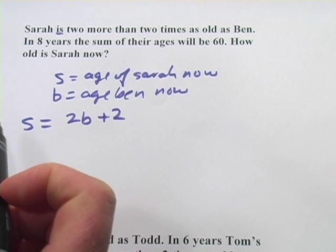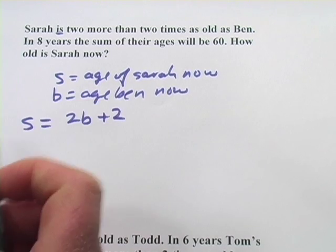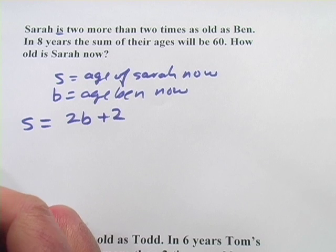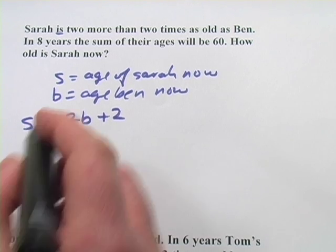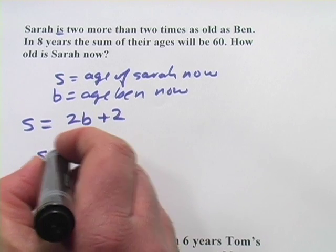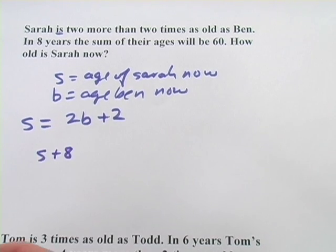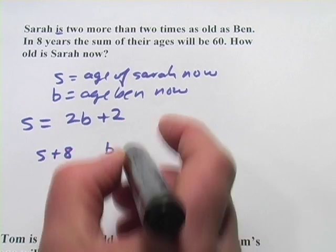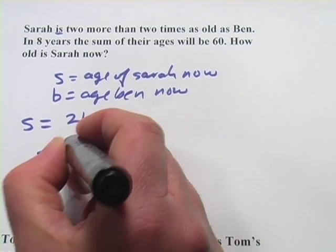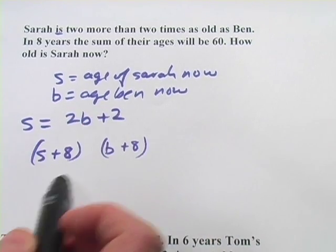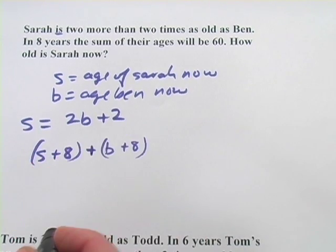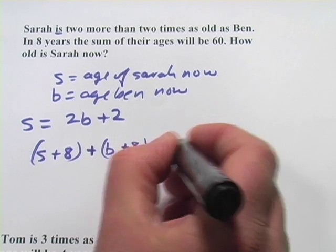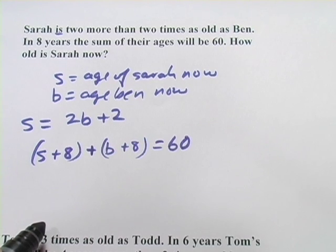Now, it gets a little trickier in the second sentence. It says, in eight years, the sum of their ages will be 60. So what you need to ask yourself is, how old will Sarah be in eight years? She'll be the same age she is now, plus 8. How old will Ben be? He'll be Ben's age, plus 8. So there's Sarah in eight years, there's Ben in eight years. In eight years, the sum of their ages, so add them together, will be 60. There's our second equation.